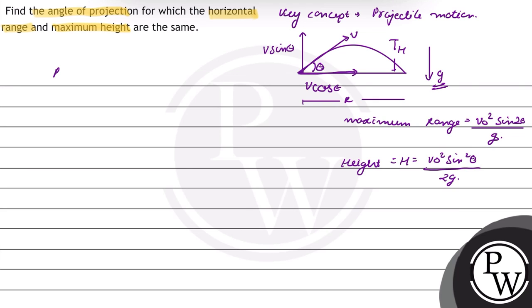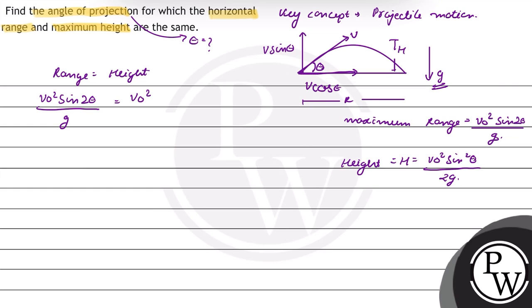In this question, we are given that horizontal range and height are the same. So we have to find out the angle of projection, that is theta. Setting R = H, we get V₀² sin(2θ) / g = V₀² sin²(θ) / 2g. V₀² and g cancel out.